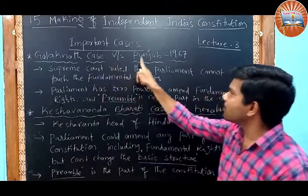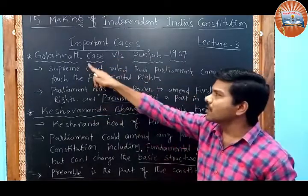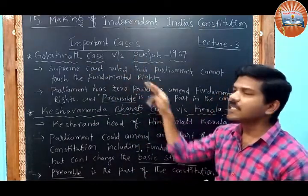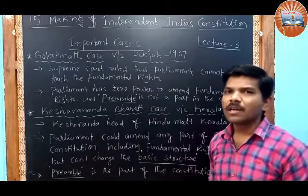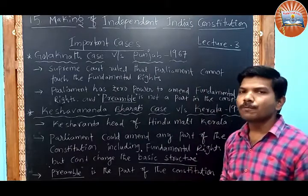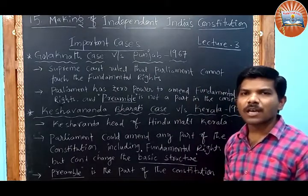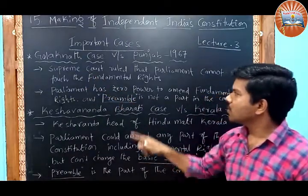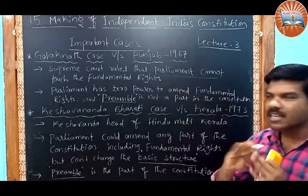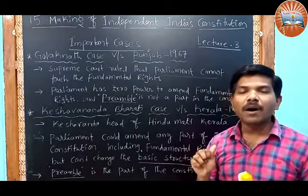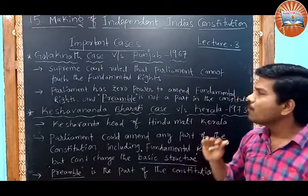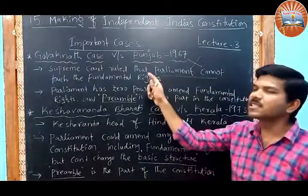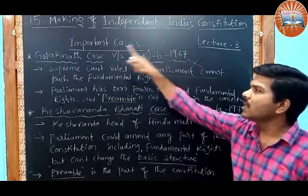Golaknath versus Punjab — this case was between a person named Golaknath from Punjab and the State of Punjab. This case is related to land issues. In 1967, the Supreme Court gave a judgment ruling that Parliament cannot touch or change the fundamental rights.